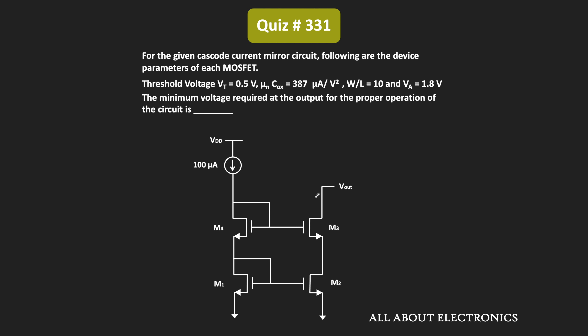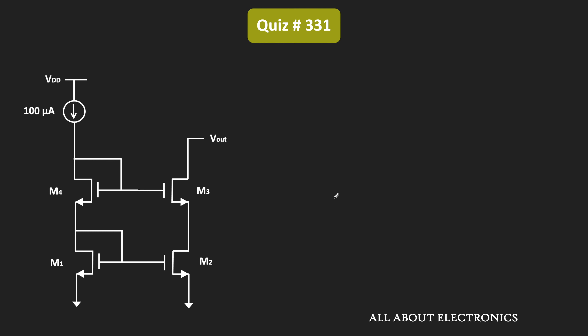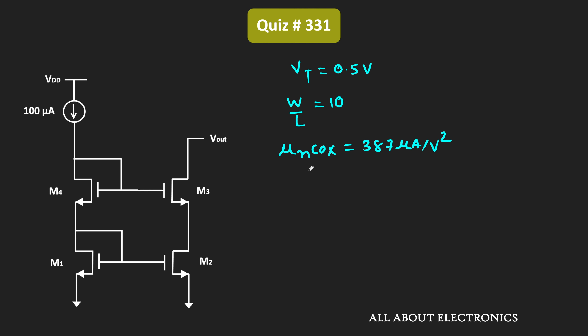We have been asked to find the minimum required voltage at the output so that the circuit will operate properly. All the MOSFETs are identical, meaning the device parameters of all the MOSFETs are the same. The threshold voltage Vt is equal to 0.5V, the W/L ratio for all MOSFETs is equal to 10, μnCox for all MOSFETs is equal to 387μA/V², the Early voltage for all MOSFETs is equal to 1.8V, and the reference current is equal to 100μA.